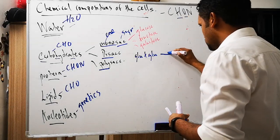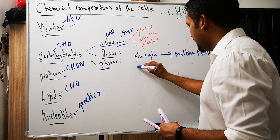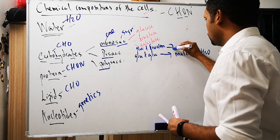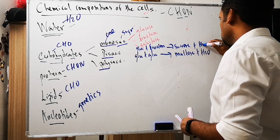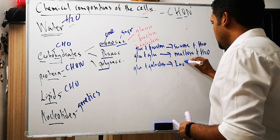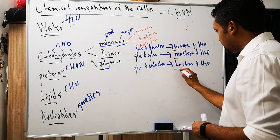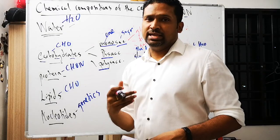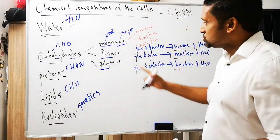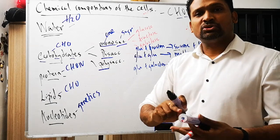The three types of disaccharide are sucrose, maltose, and lactose — you can remember them as small, medium, large like shirt sizes. Glucose plus glucose gives maltose plus water. Glucose plus fructose gives sucrose plus water. Glucose plus galactose gives lactose plus water.